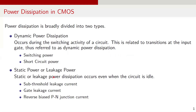Static or leakage power dissipation occurs even when the circuit is idle, primarily due to leakage currents. It has three main contributors: sub-threshold leakage current, gate leakage current, and reverse biased PN junction current.